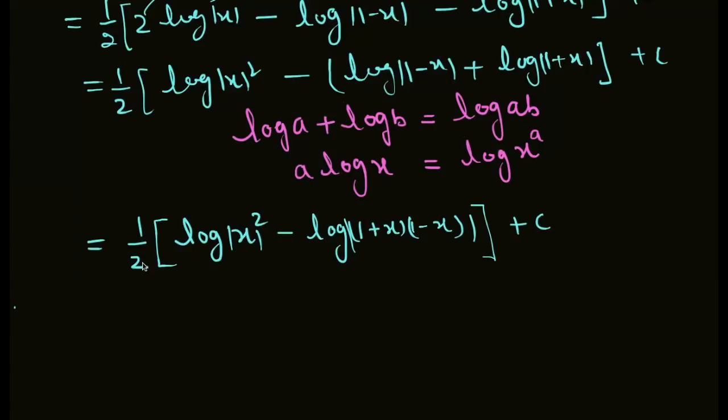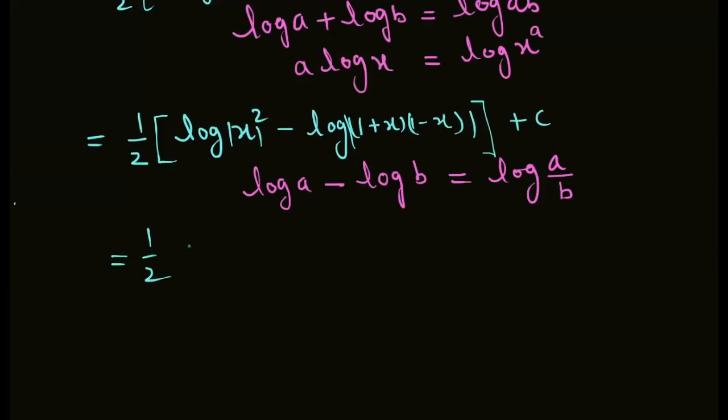This becomes 1 upon 2 log(x squared) minus log[(1 plus x)(1 minus x)] plus C. Using the property log a minus log b equals log(a upon b), here log a minus log b.